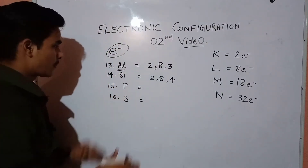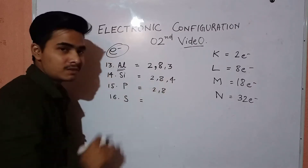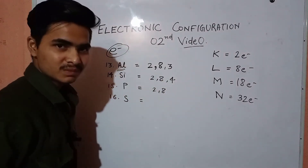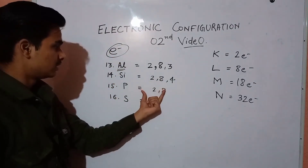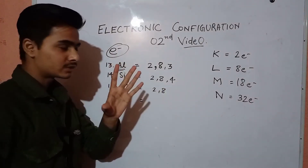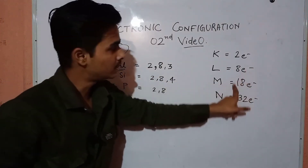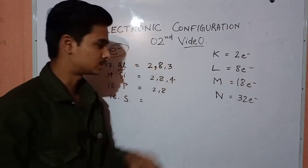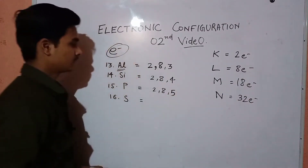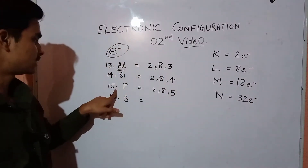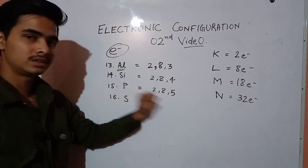Now we have phosphorus. The first 2, 8 is the same as before. Phosphorus has atomic number 15, so where will the remaining 5 electrons go? Into the M shell, because it can hold a maximum of 18 electrons, so it can hold 5. The electronic configuration of phosphorus is 2, 8, 5.